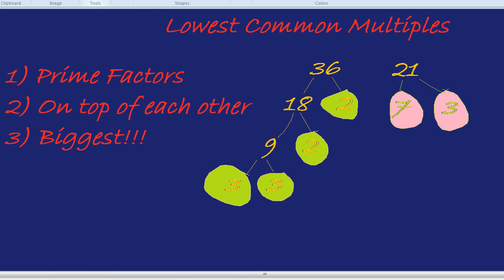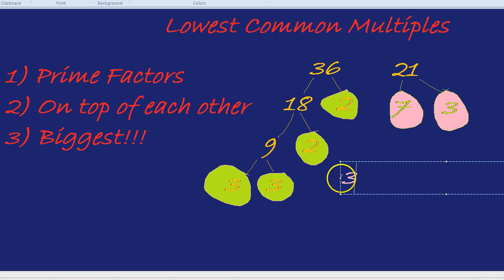The second step was to write them on top of each other. 36 is 3 squared times 2 squared. It's always better to write them with the power rather than 3 times 3 or 2 times 2.